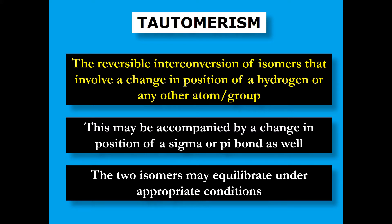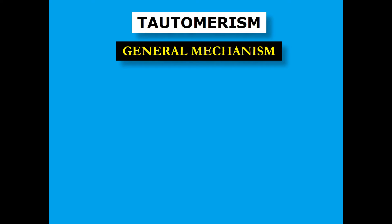Let's see the general mechanism of tautomerism and how it actually happens under different conditions. Tautomerism is usually triggered either by an acid or a base, so it can be an acid-catalyzed or a base-catalyzed reaction.